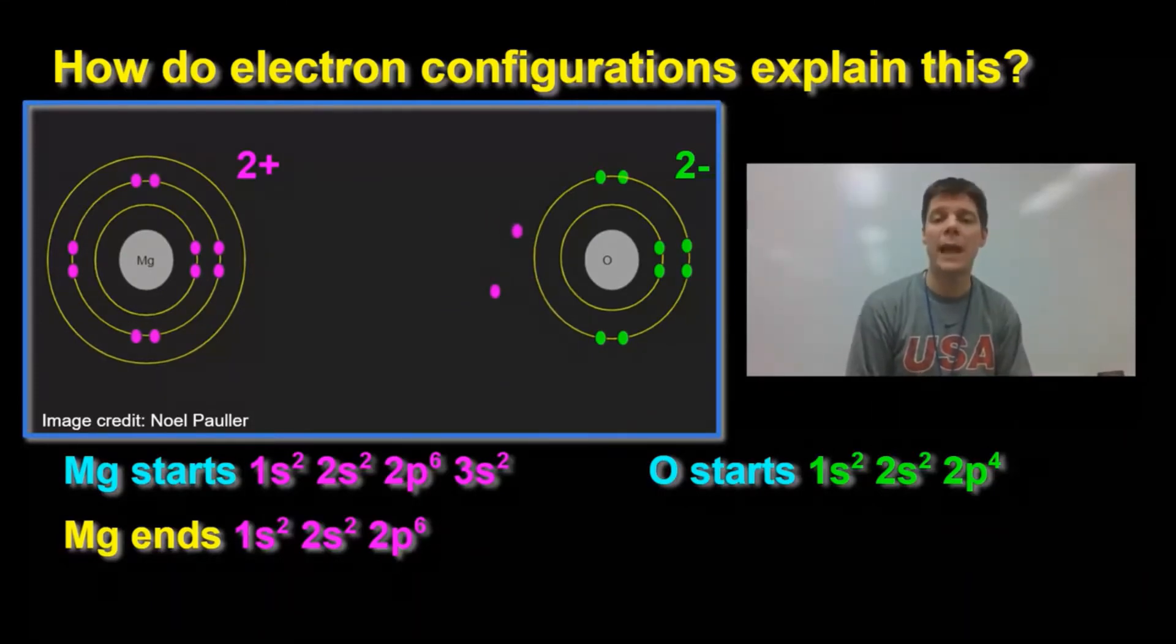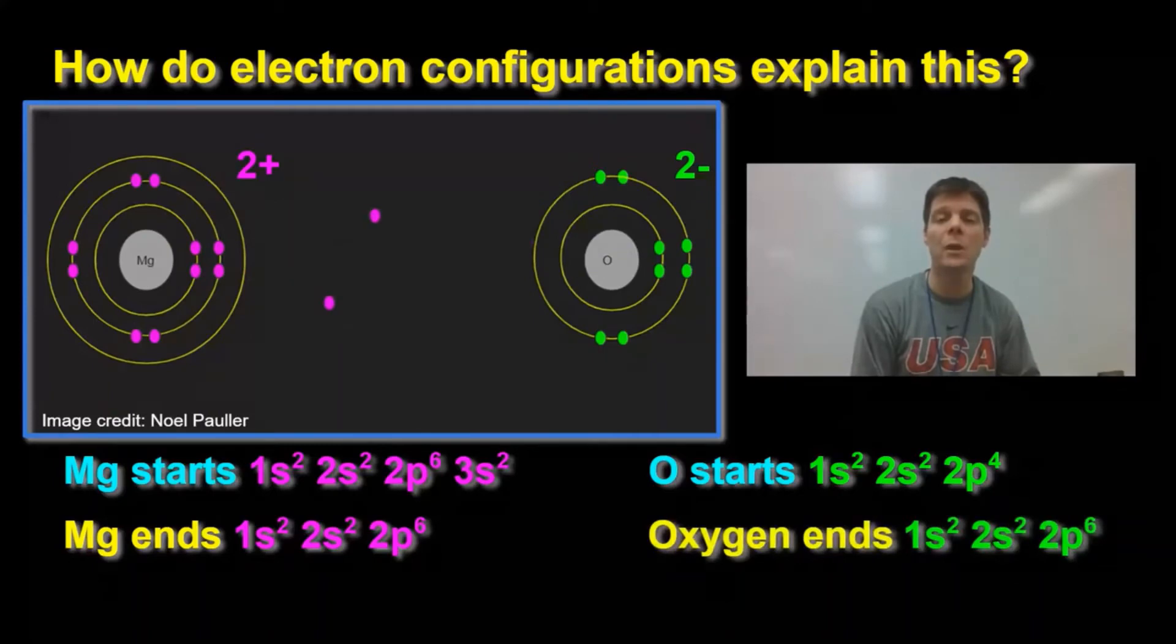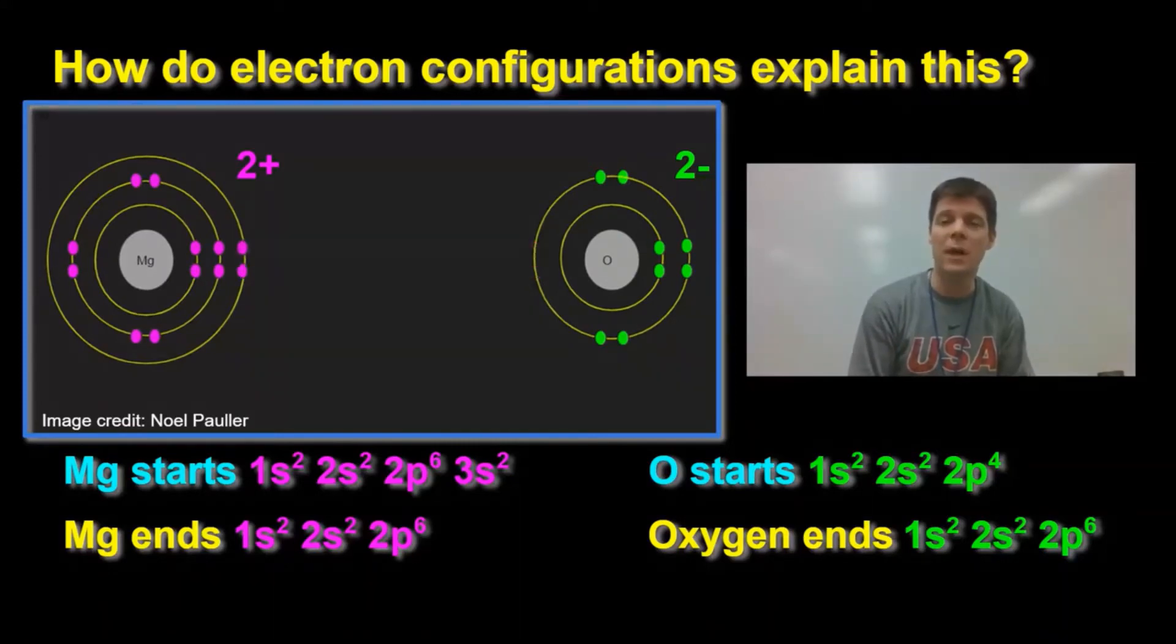The oxygen atom gains two electrons. This changes its electron configuration. Now, as an ion, it will be 1s2, 2s2, 2p6. This is also going to stabilize the oxide ion. With eight valence electrons, it has a complete outer shell. That makes the oxide ion stable. So this is how electron configurations help us to explain why magnesium atoms lose two electrons and oxygen atoms gain two electrons and why the compound that's formed is formed in a one-to-one ratio giving a chemical formula of MgO.